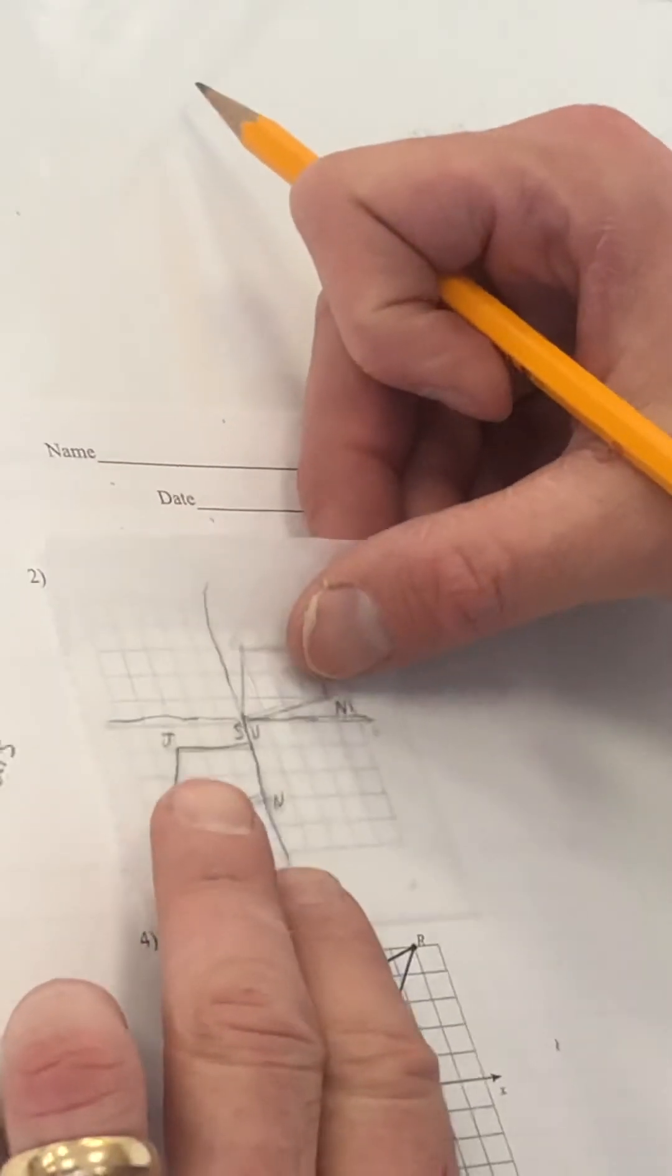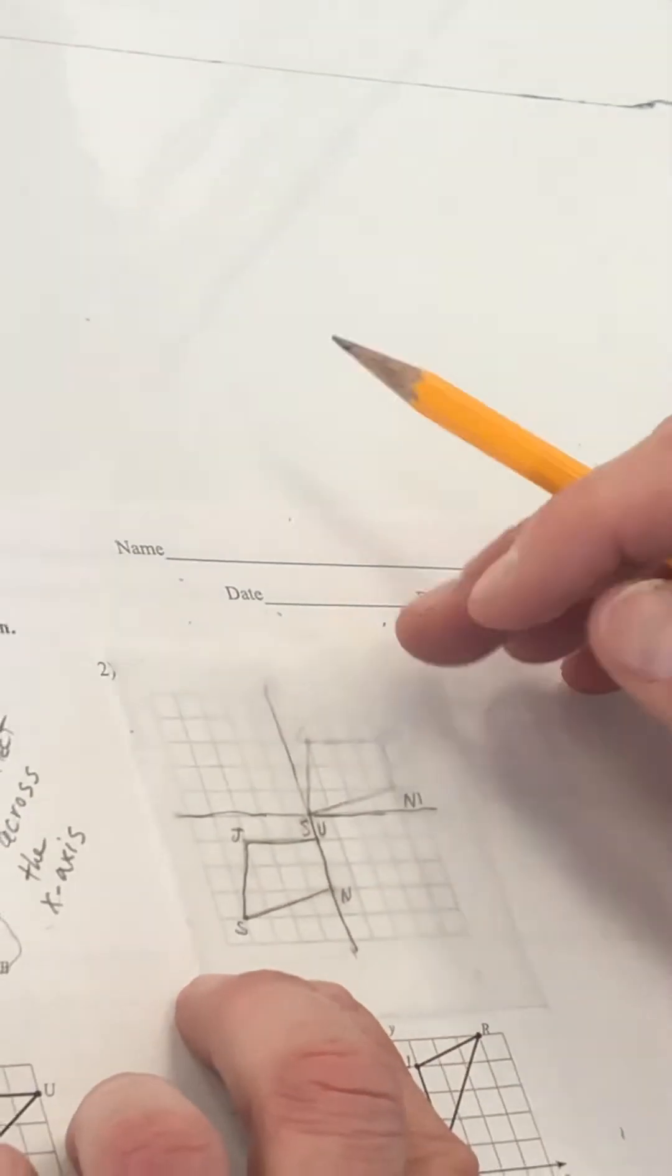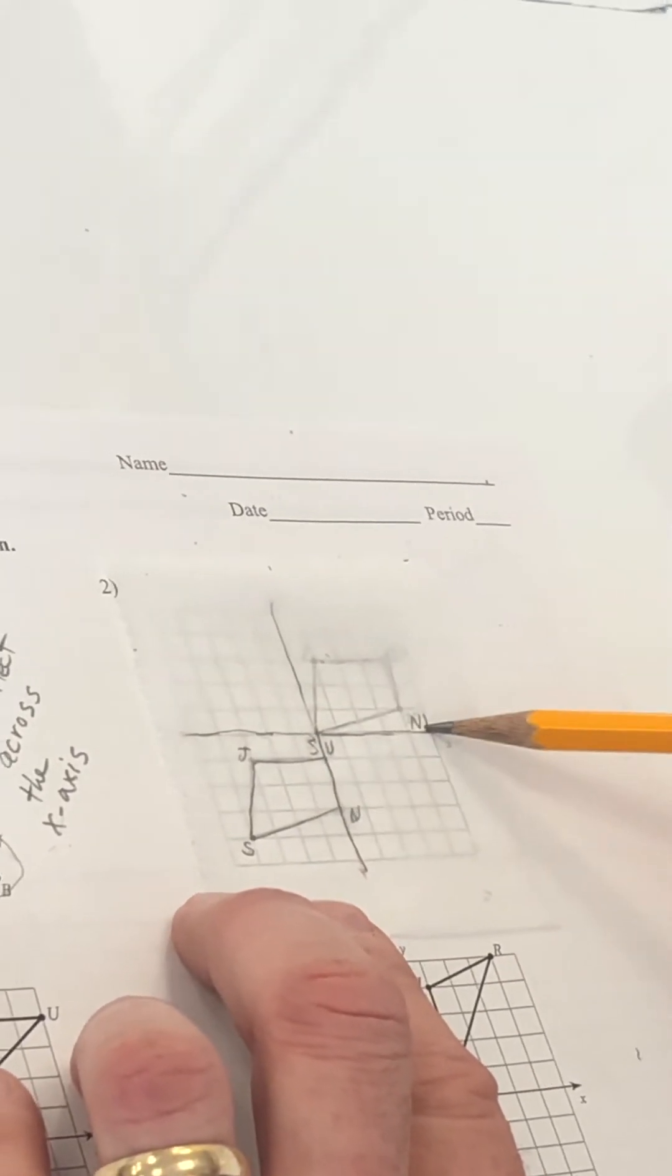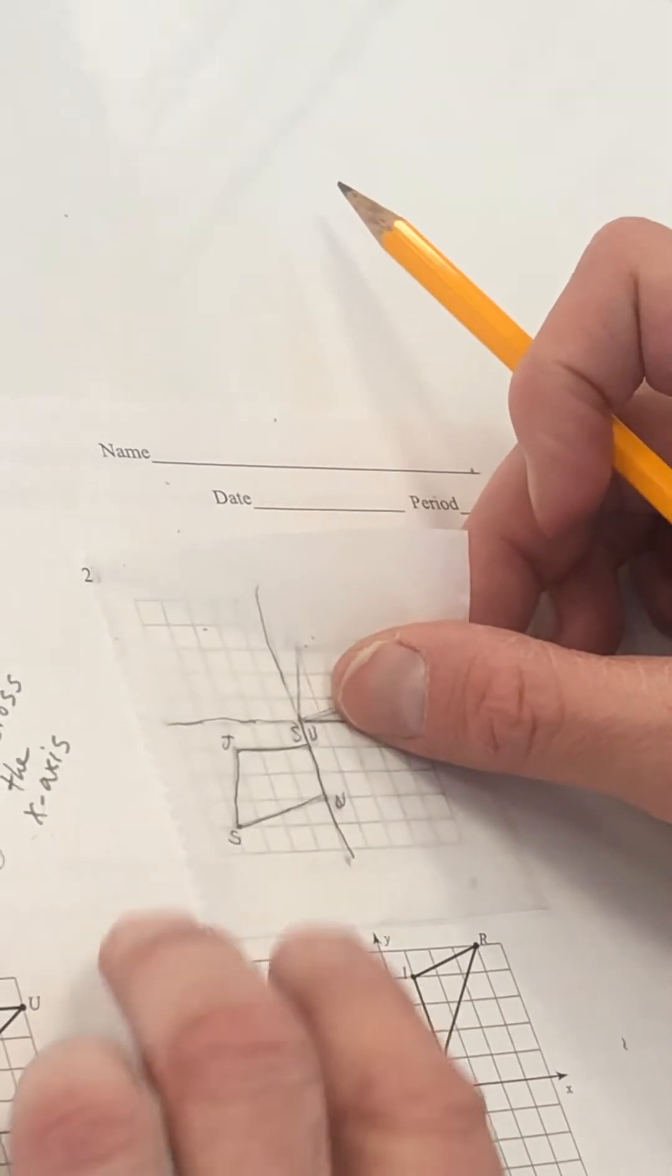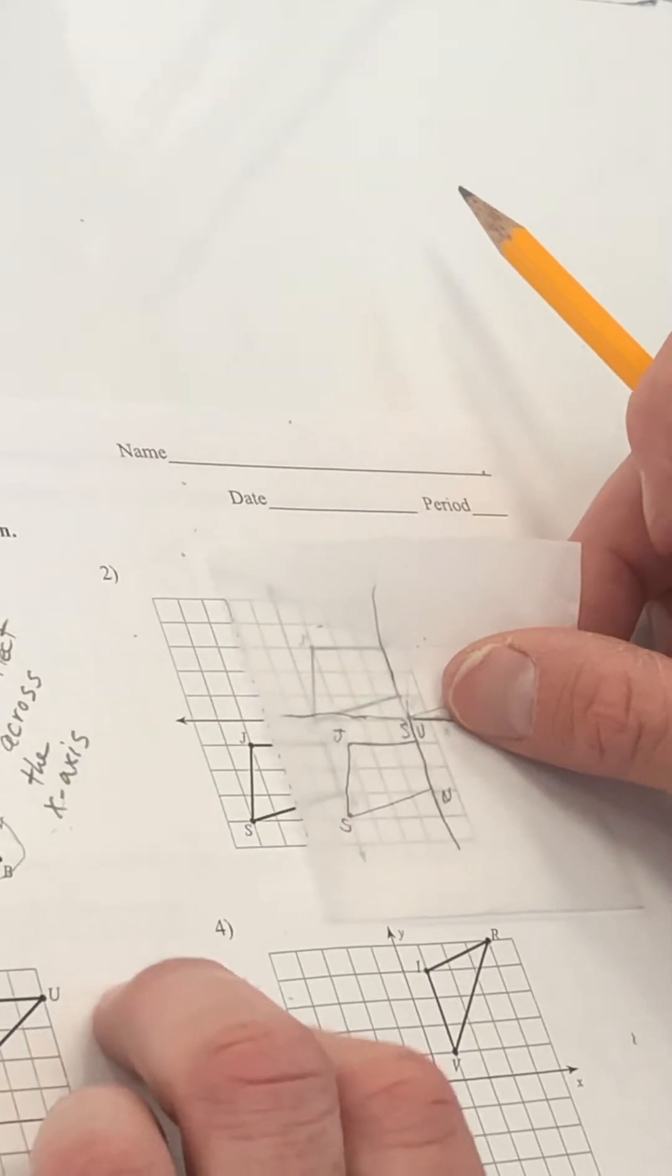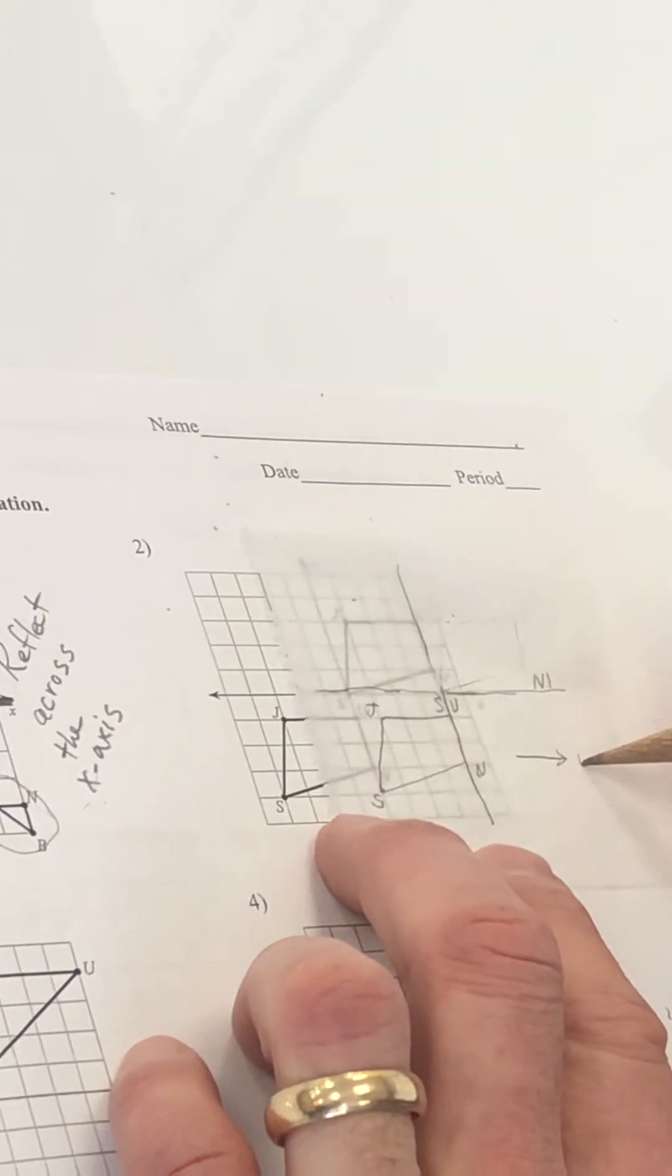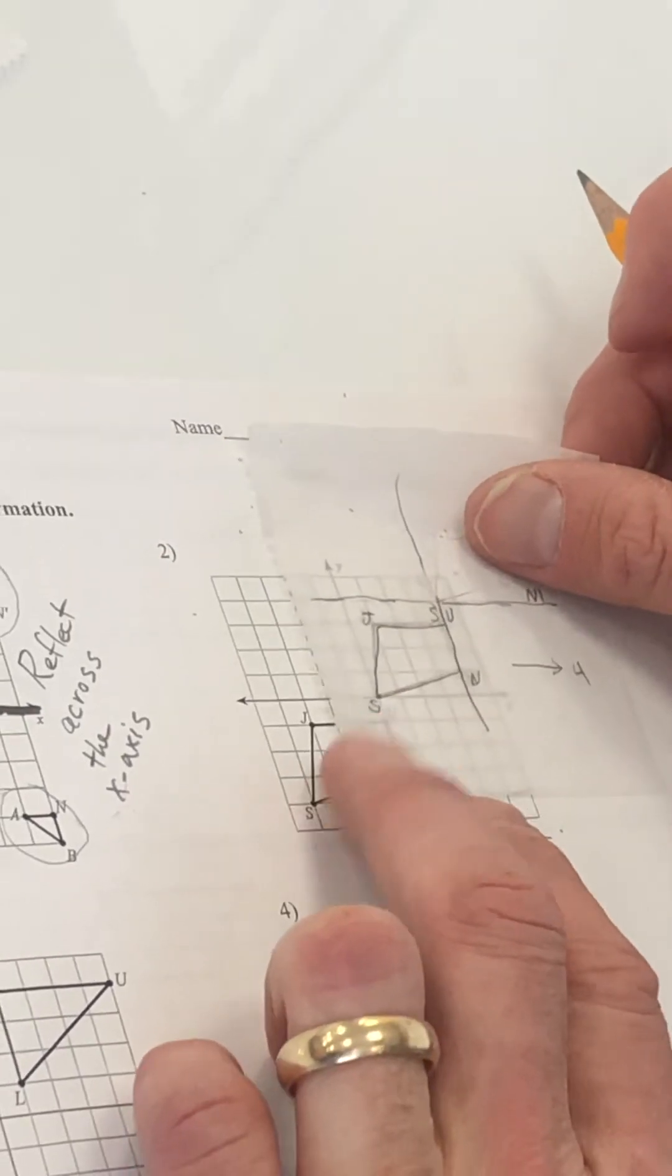Number two. Got my patty paper or my parchment paper or whatever. And I've traced it all. See that? Traced it. And now I've got to figure out how to get from here to here. So J to J prime, N to N prime, S to S prime. So it looks like it's a slide. So I'm going to slide it over. So I went to the right four. And then I'm going to slide it up one, two, three, four.